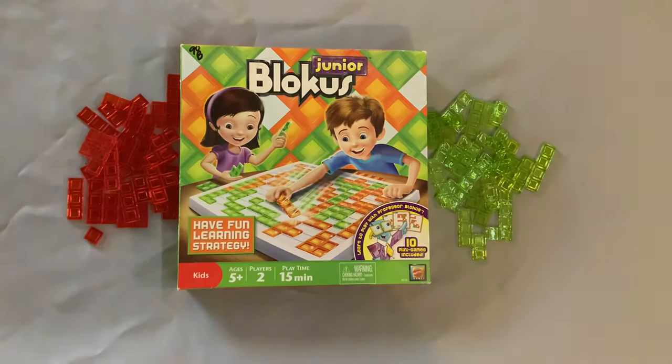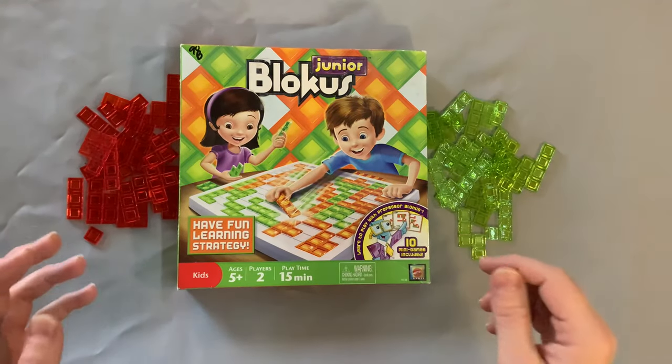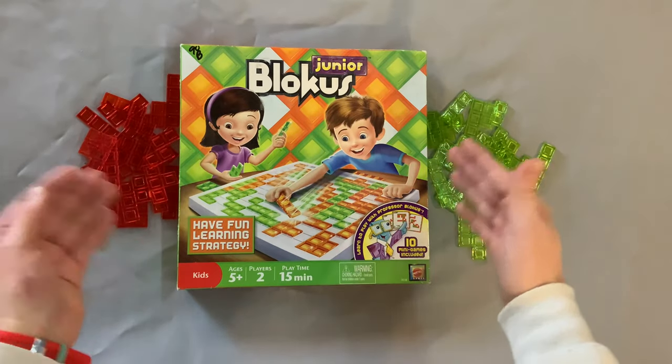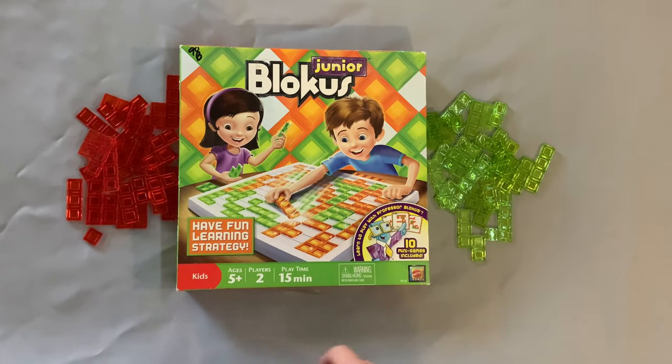Ahoy there YouTube, I'm back again for another episode of Skip the Rules. Today we're skipping the rules for Junior Blokus. This is for two players ages five plus, takes about 15 minutes to play. Also at the end of the video I'm going to show you how to play the 10 included mini games.